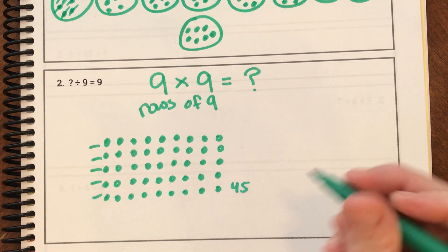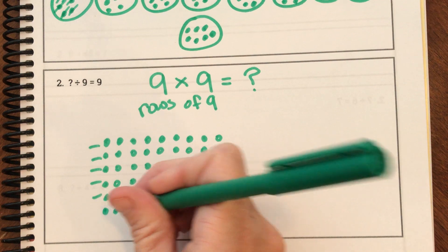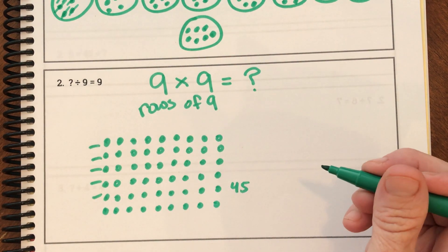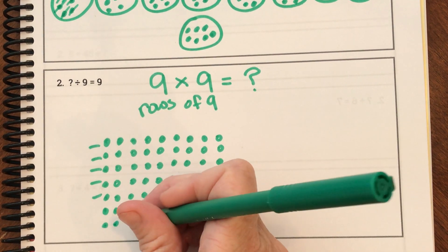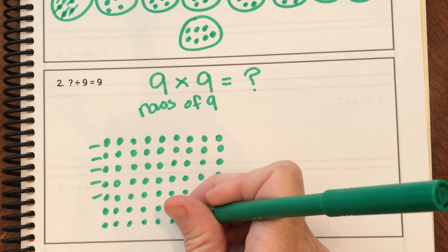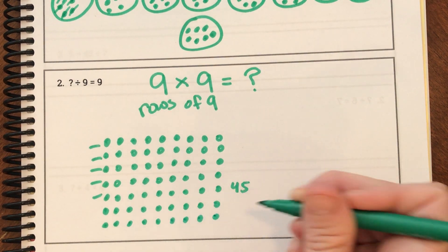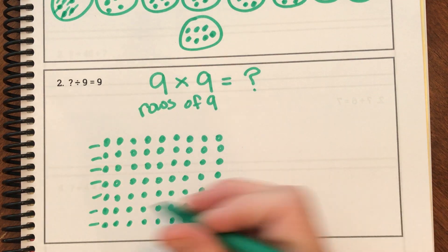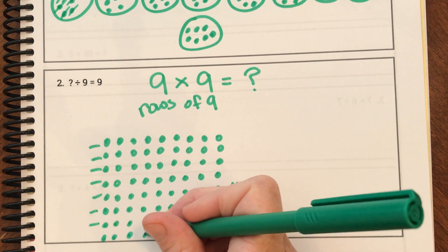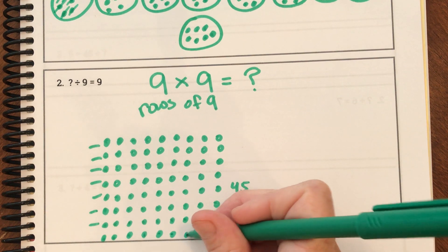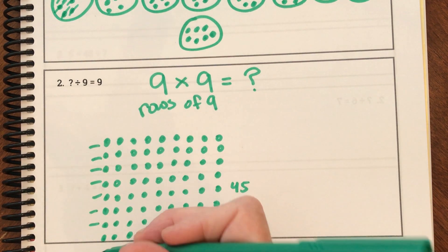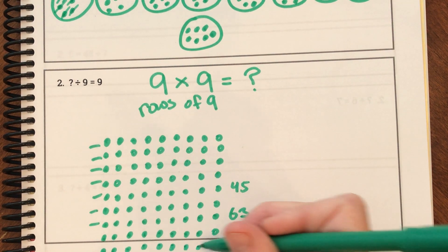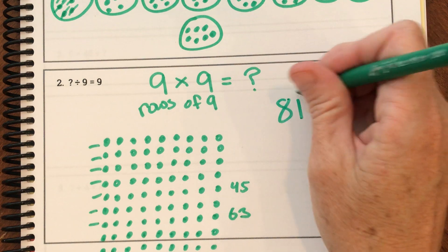[Continuing to count rows 46 through 72]. And that was seven rows. We have two more rows. [Counting final rows to 81]. 81, friends. 81.